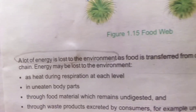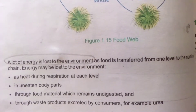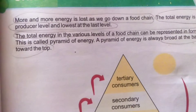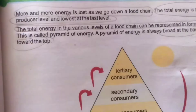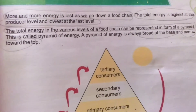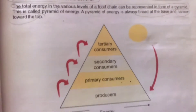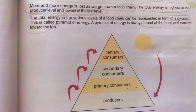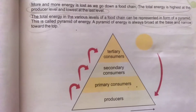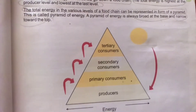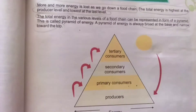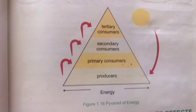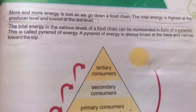A lot of energy is lost to the environment as food is transferred from one level to another. More and more energy is lost as we go down a food chain. The total energy is highest at the producer level and lowest at the last level — the final consumer gets the least energy. The total energy at various levels of a food chain can be represented in a pyramid of energy, which is broad at the base and narrow at the top.